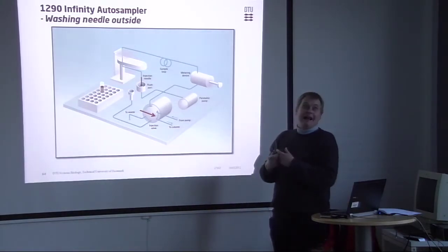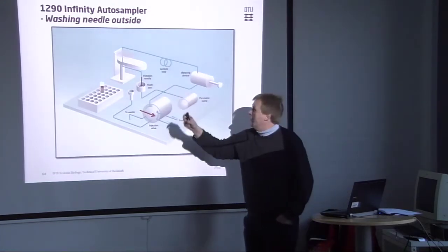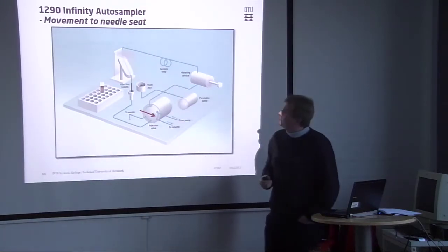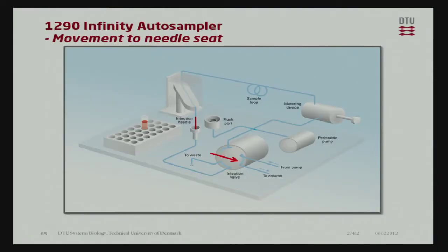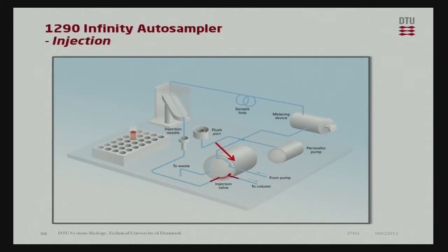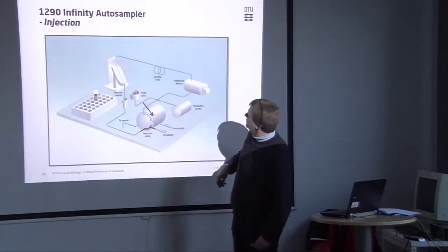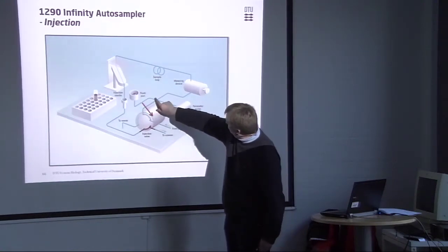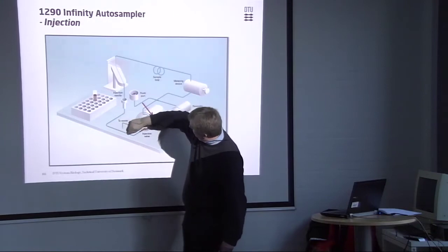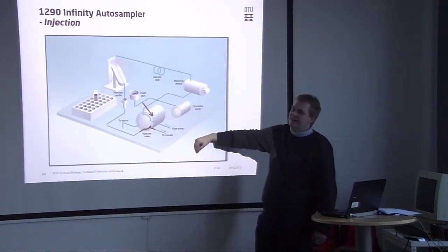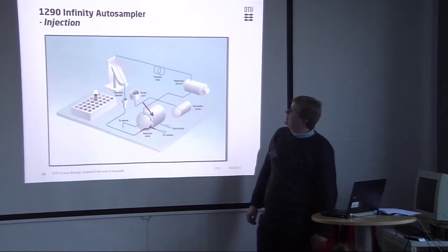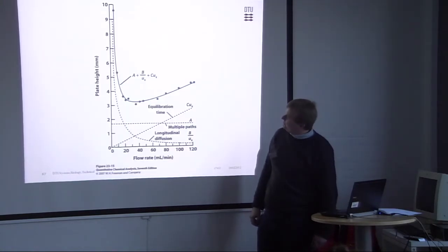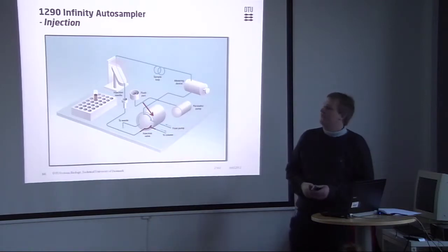So, you would need a lot of blanks and everything to prove that. So, now it goes to the flush port, the needle is washed outside. And now it can actually go to the injection seat. And see, now this valve has changed. So, now the flow goes this way. So, now our sample is passing through and is coming in and can hit the column. So, let's have a little bit. So, now to the column.